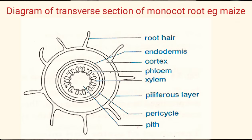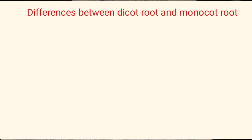We also have the transverse section of a monocot root — for example, maize. This is how the diagram looks like. The parts are: root hairs, epidermis, cortex, endodermis, xylem, phloem, pericycle, and pith.